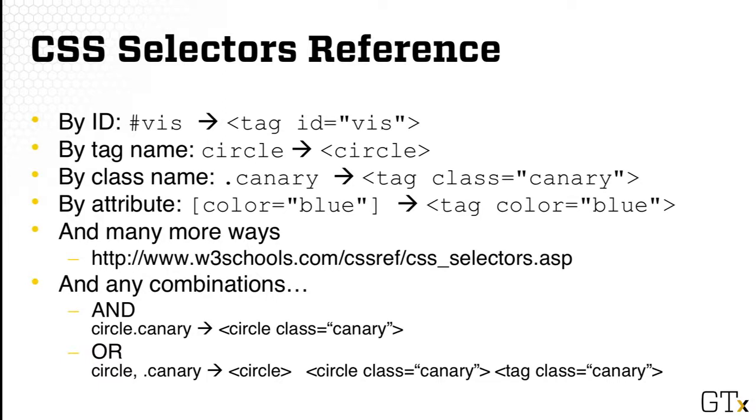A very powerful way to select and assign things is through combinations. For example, you can actually do something called AND. Let's say I want all the circle that has a particular class name. That means I want circle AND canary, for example. Then doing circle.canary will be applying the AND condition. Similarly, you can say I want circle OR anything that has a class canary. Then what do you do? You would do circle comma .canary. Here, there's a slight difference from the example you saw previously. We're using the comma to separate the two kinds of selection.